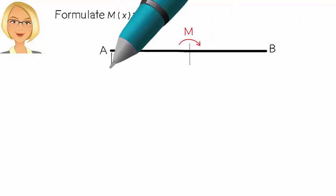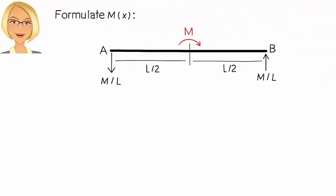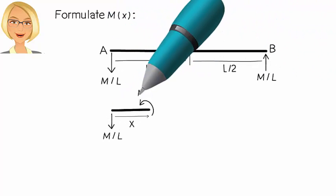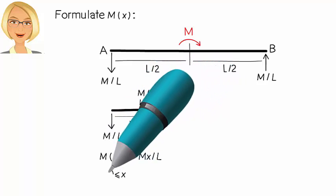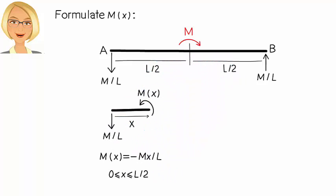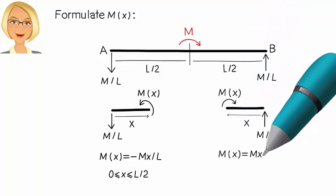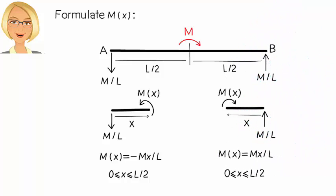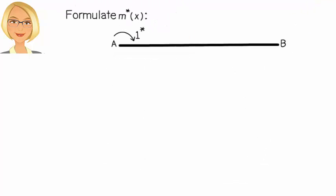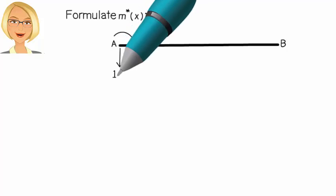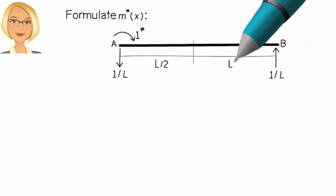M(x) can be easily determined as shown here. To determine M star (x), we place a unit clockwise moment at A, like this. Then, we can write the beam's bending moment equation like this.